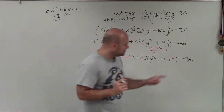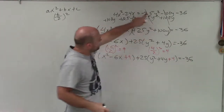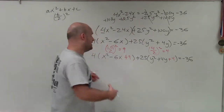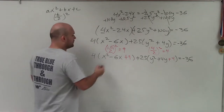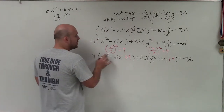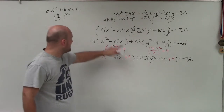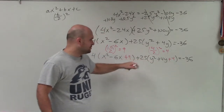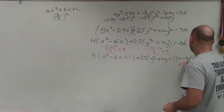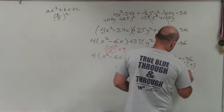Remember, since we have an equal sign, if we're adding numbers on the left side, we've got to add them on the right side too. Just because we're adding inside the parentheses doesn't mean we skip the right side. Since 4 is multiplied by every term inside the first parentheses and 25 by every term in the second, I didn't just add 9 — I actually added 9 times 4. And I didn't add 4 — I actually added 4 times 25. So on the right side, I add plus 9 times 4 and plus 4 times 25.